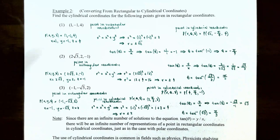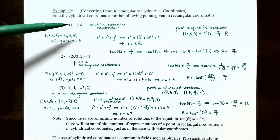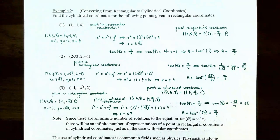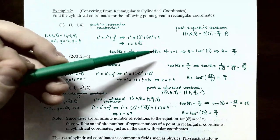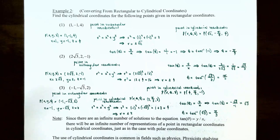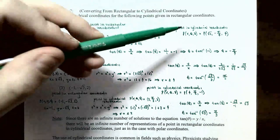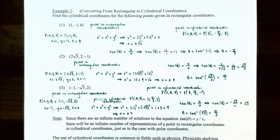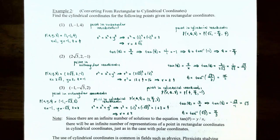z is already 4, so we have that. To find r, use r squared equals x squared plus y squared, obtained from the Pythagorean theorem. r squared equals 1 squared plus (−1) squared equals 2, so r equals plus or minus square root of 2. We'll take r to be positive √2. For theta, tangent theta equals y over x equals −1 over 1 equals negative 1. So theta equals arctan(−1) equals −π/4. Therefore, the point (1, −1, 4) in rectangular coordinates is (√2, −π/4, 4) in cylindrical coordinates.